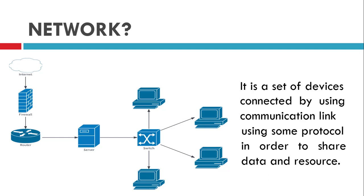You may find many network examples in today's world, but the example I like the most is the human. If we fit ourselves into the definition of network, we are in our own network. The definition says a network is a set of devices — you and I are each one device. Computers have their own software and hardware, and in the same way we also have different types of software and hardware in us. The definition also says connected by using some communication link — we are connected using a wireless link. Then using some protocol — yes, we are also using protocols.